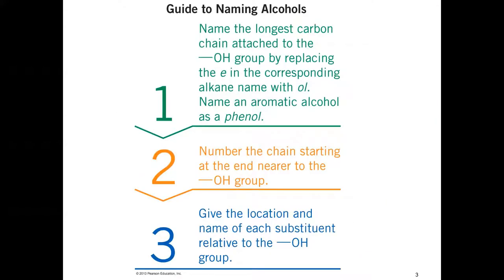Let's focus on naming alcohols first. The naming follows the same pattern we've used before: name off the longest chain of carbons, use the alkane name — say if the longest chain is four, we use butane — then drop the E and replace it with OL, meaning it's an alcohol. So we'd have butanol in this case.